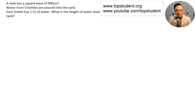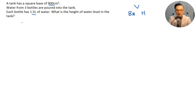A tank has a square base of 900 cm squared. Water from three bottles is poured into the tank. Each bottle has 1.5 liters of water. What is the height of the water level in this tank? Draw the triangle: volume equals base area times height. Base area is 900 cm squared. To find height, I need the volume.